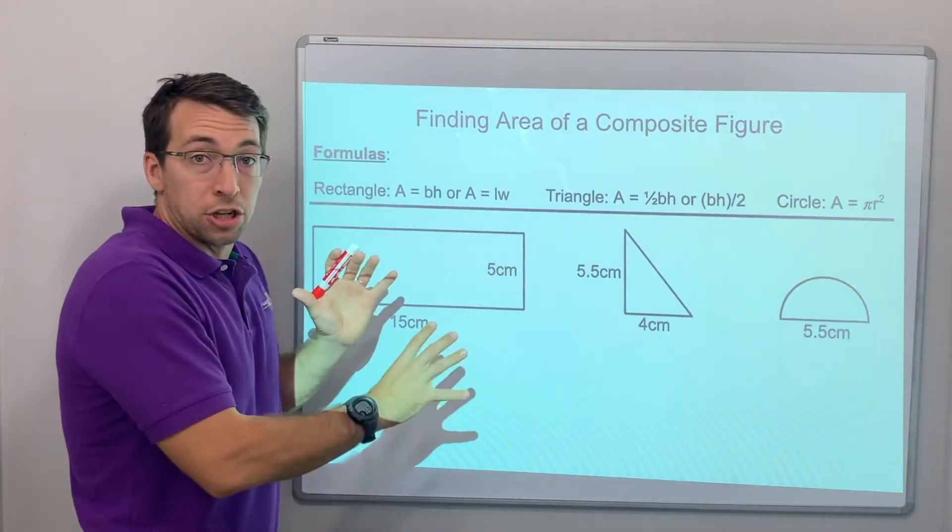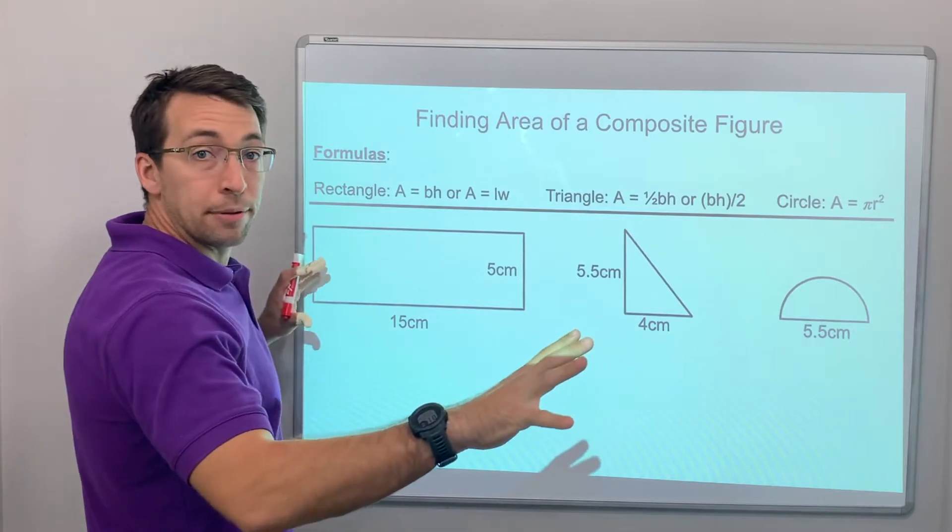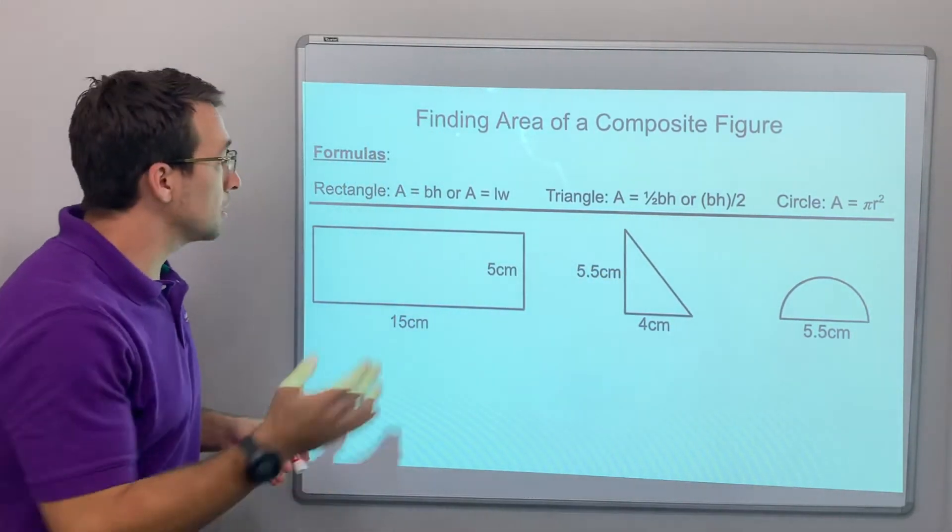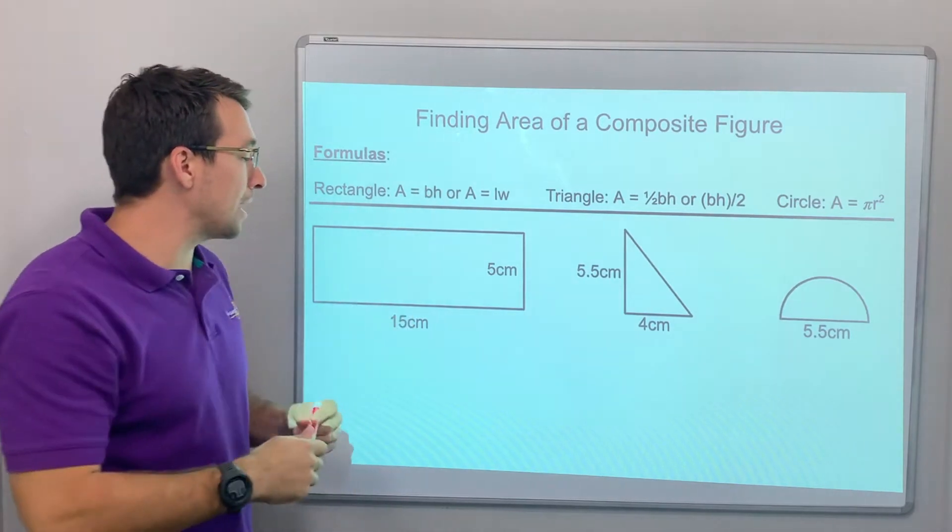I just took that shape and I broke it up. So now we have the rectangle, the triangle, and the half circle. So let's look at it. Rectangle base times height. Well, let's do that.